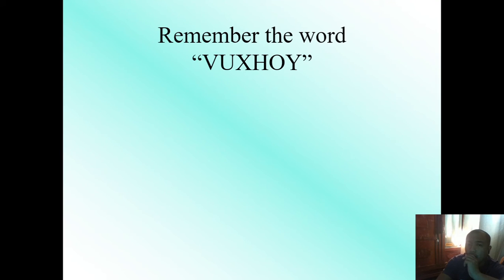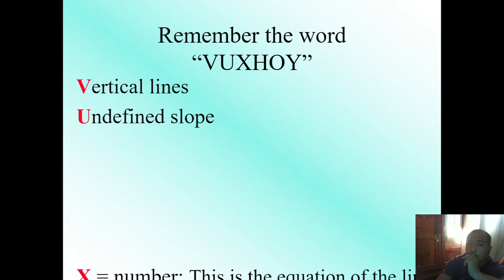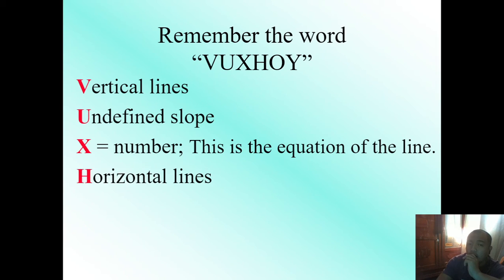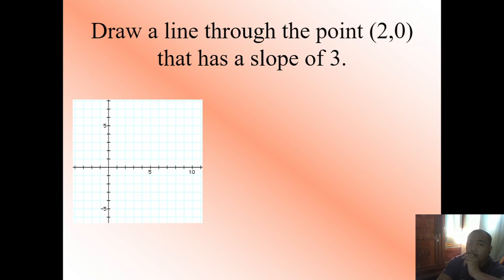Remember the mnemonic VHOX: V for vertical lines, U — undefined slope, X — the equation is x equals a number. H for horizontal lines, 0 — zero is the slope, Y — the equation is y equals a number.